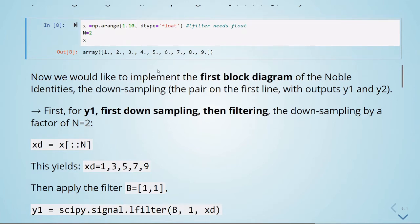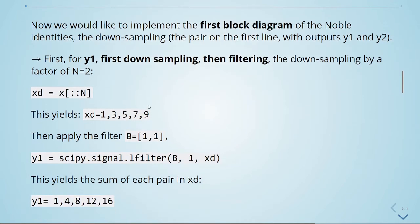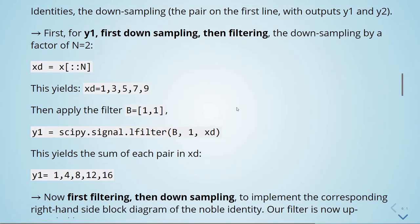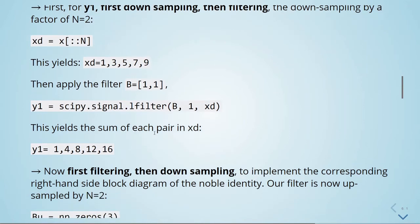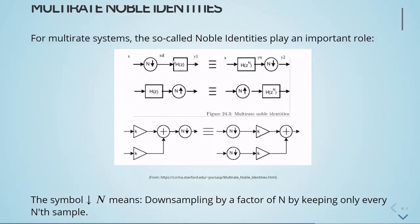So our original array gives us [1, 3, 5, 7, 9] after downsampling. Then we apply a filter using lfilter from SciPy. This yields the sum of each pair in the downsampled array, giving us y1.